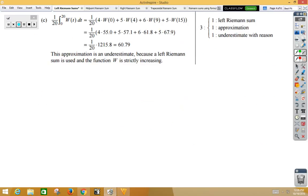Let's see how they graded that. So again, let's see, they went ahead and used the same values that we did. This time, because it was an average, we have to multiply by 1/20th or divide by 20. We would get 60.79. It is an underestimate, because the left Riemann sum is a strictly increasing function. Again, three points. One point for the sum, one point for the approximation, one point for the underestimate with reason.